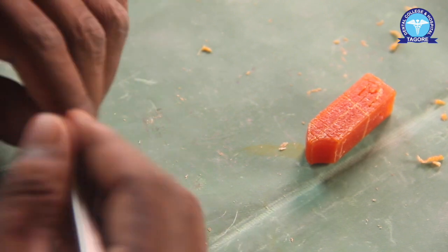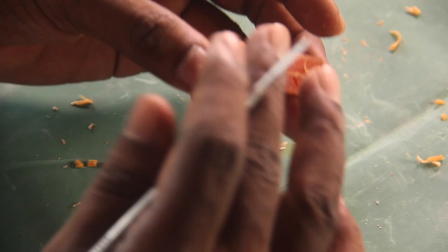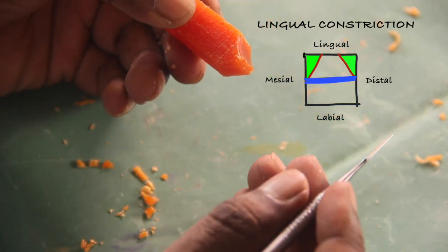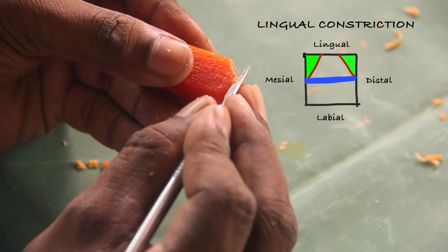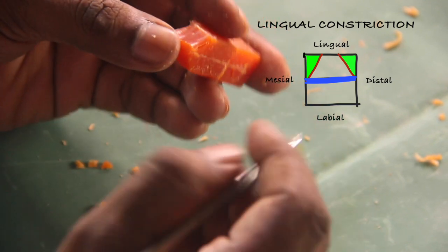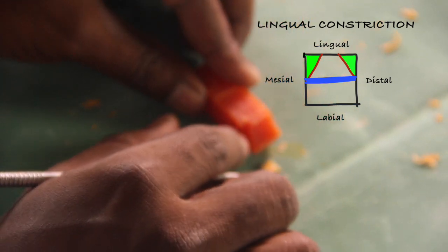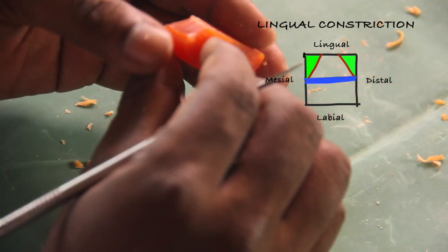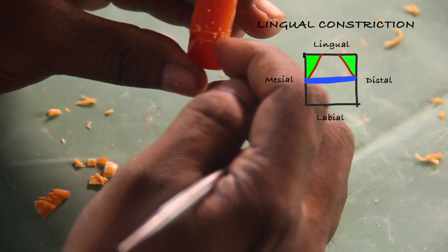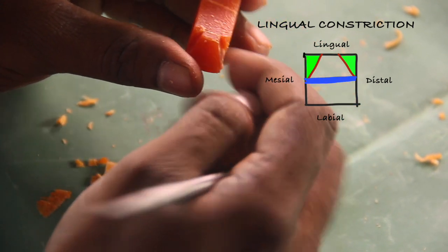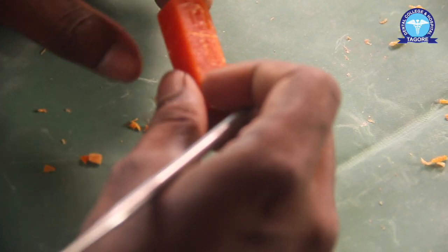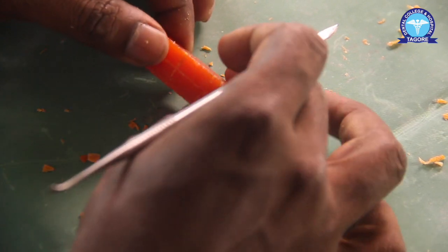The next step is to give the lingual constriction, also called palatal constriction. The palatal side should converge — the lingual side is always smaller than the labial side. Give an even sloping on both sides — this is called lingual convergence. Don't cross into the root part; keep the carving only in the crown part. The palatal side is smaller when compared to the labial side.